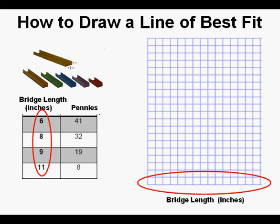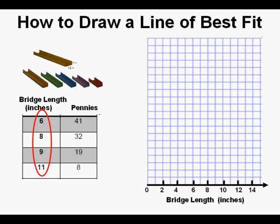Therefore, it makes sense to use one square for every inch of bridge length, so we'll draw the axis and let each square count as one. I numbered every two units.